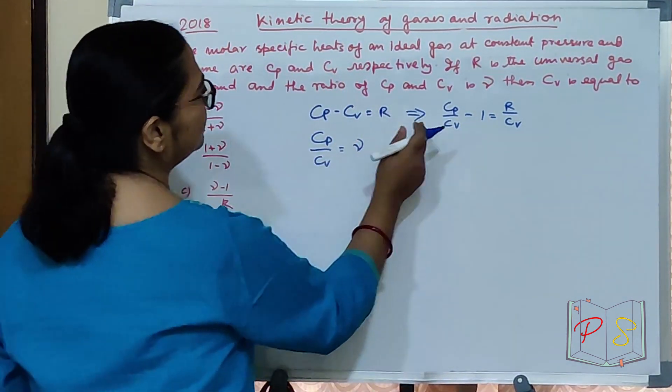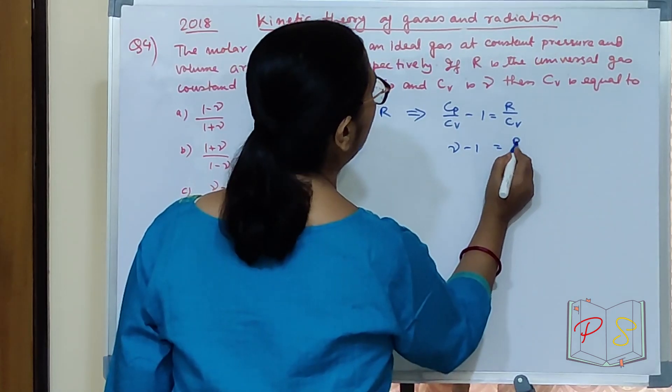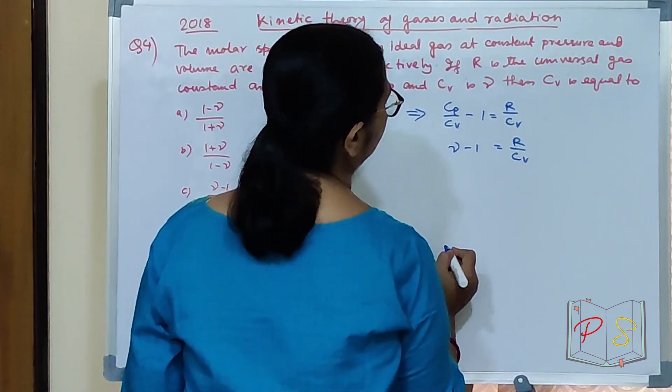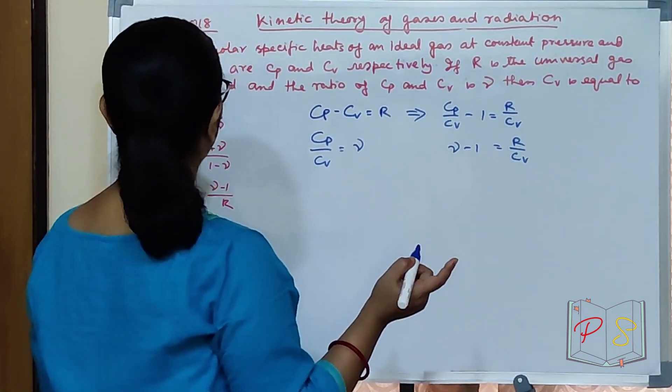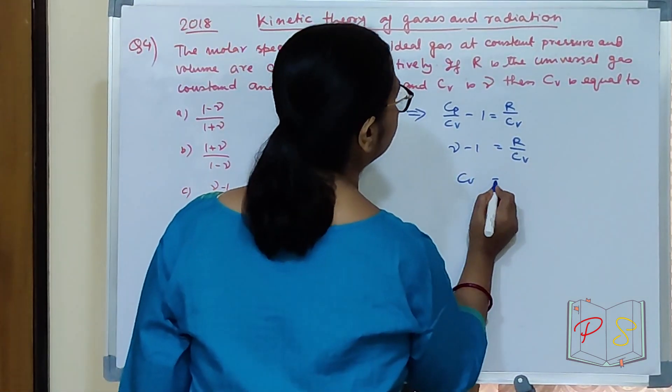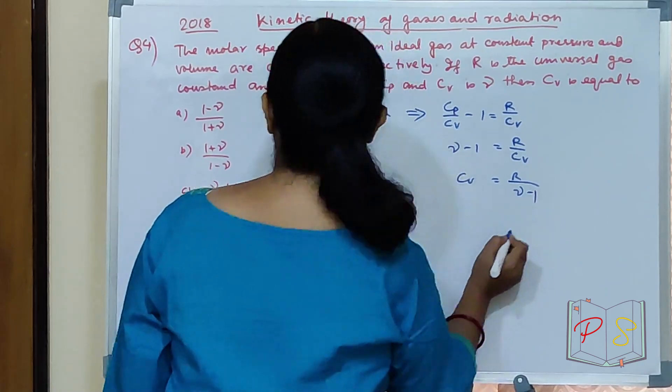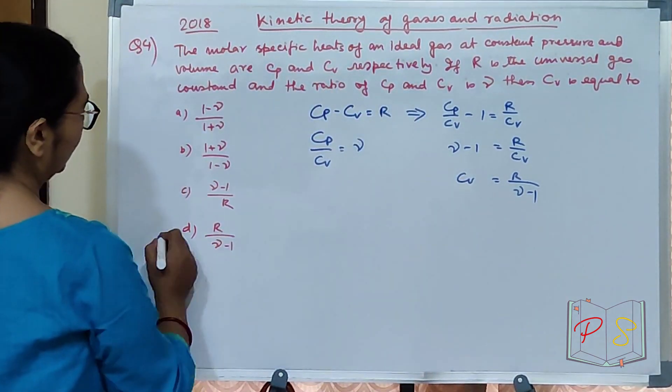Cp by Cv is gamma. Gamma minus 1 equal to R by Cv. You have to get the Cv. What is Cv equal to? R by gamma minus 1.